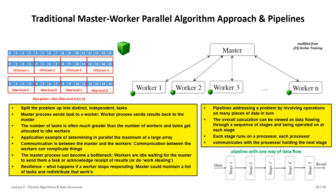A very popular approach to parallelization is also pipelining, where different operations act on different pieces of data in turn. You have one pipeline where data flows through different stages that perform operations on it — from left to right through a sequence of well-defined stages, each of which might be one processor. It's a one-way communication channel, and this pipelining idea is widely applied.